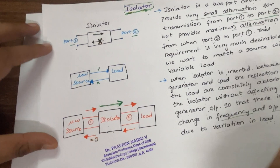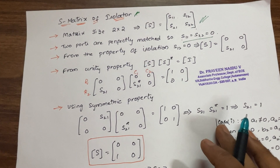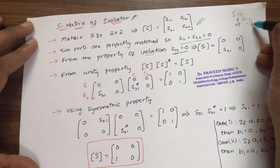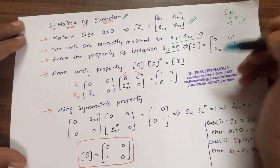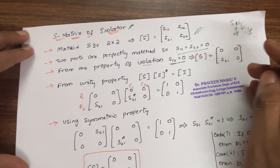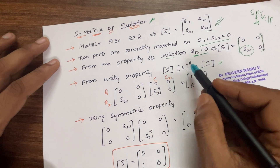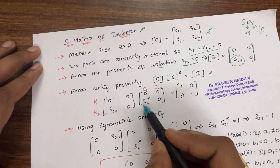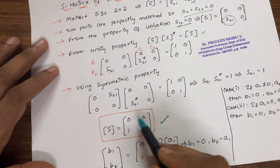Since no signal travels from port 2 to port 1, we have the isolation property: S12 = 0, meaning if you give input at port 2 and look for output at port 1, it is always zero. The modified S-matrix becomes [0, 0; S21, 0]. To find S21, we use the unitary property: S multiplied by its complex conjugate equals the identity matrix I. Solving this gives the final S-matrix as [0, 0; 1, 0].